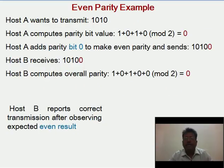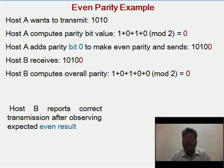Let us look at an example for even parity. Suppose Host A wants to transmit the message 1010. Host A computes the Parity Bit value by taking mod 2, which is 0. Host A adds parity bit 0 to make even parity and sends the message 10100, where the last 0 is the parity bit. Host B receives 10100, computes the overall parity, and the result is 0.